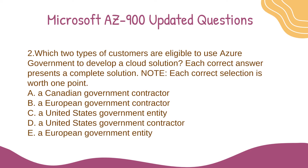Question 2. Which two types of customers are eligible to use Azure Government to develop a cloud solution? Each correct answer presents a complete solution. Note: each correct selection is worth 1 point. A. A Canadian government contractor. B. A European government contractor. C. A United States government entity. D. A United States government contractor. E. A European government entity.